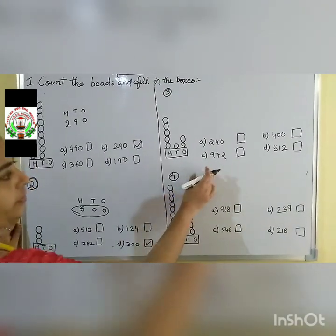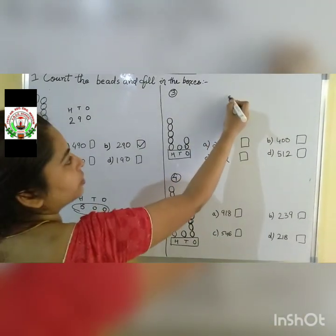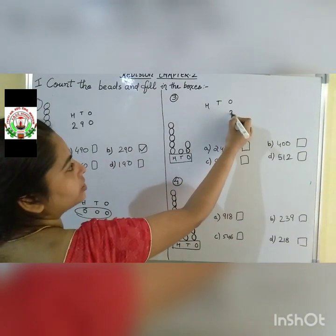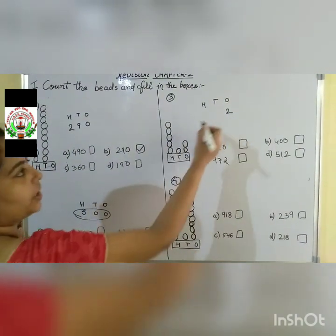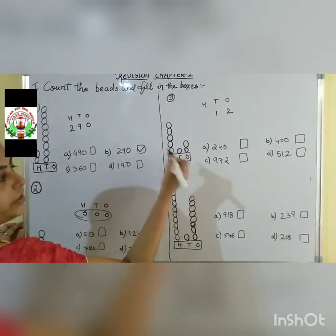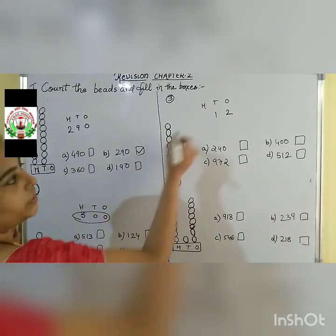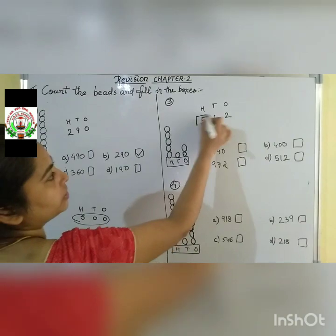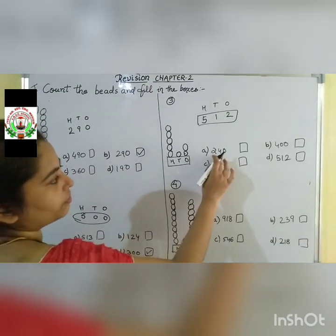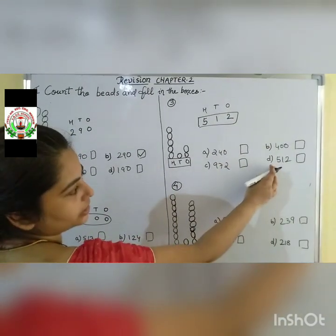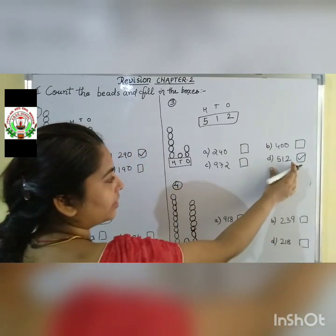Question 3: in the 1s place, 1, 2 — 2 bits. In the 10s place, 1 bit. In the 100s place: 1, 2, 3, 4, 5 — 5 bits. So our number is 512. Where is 512? In option D. Our answer is option D — 512.